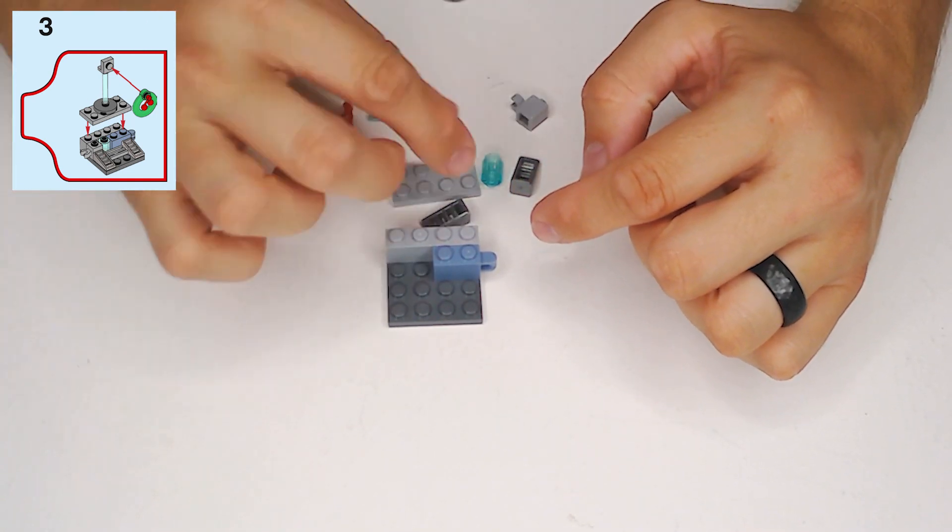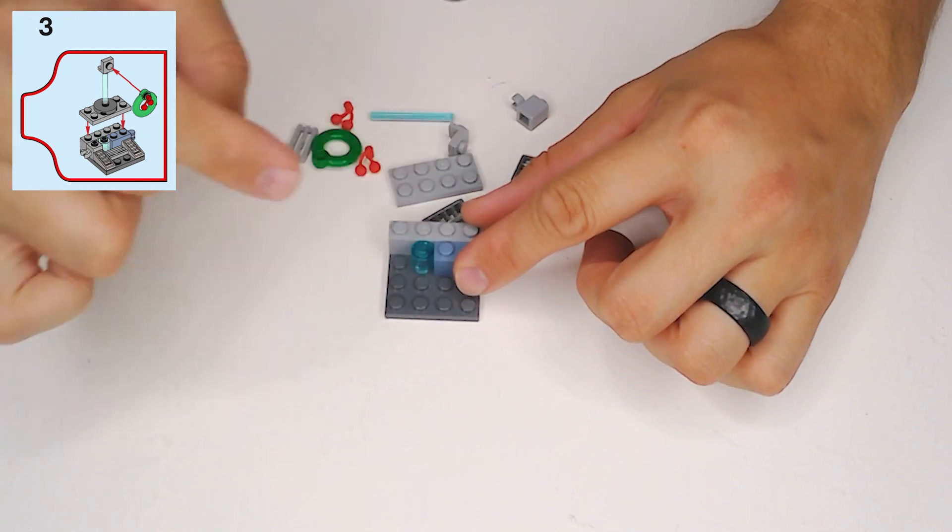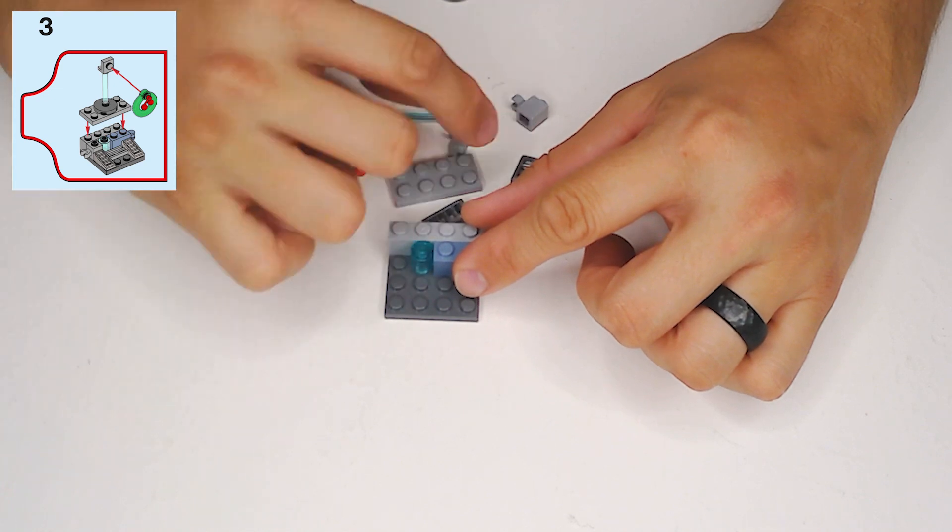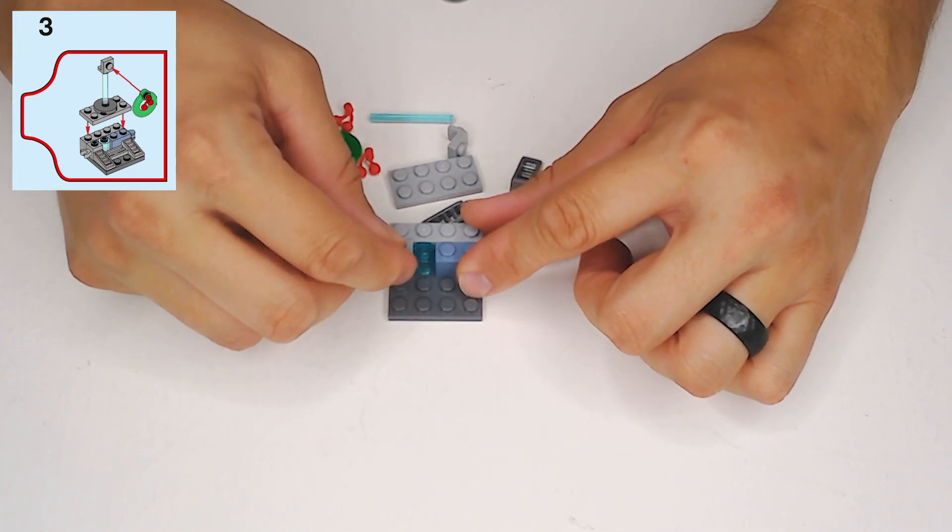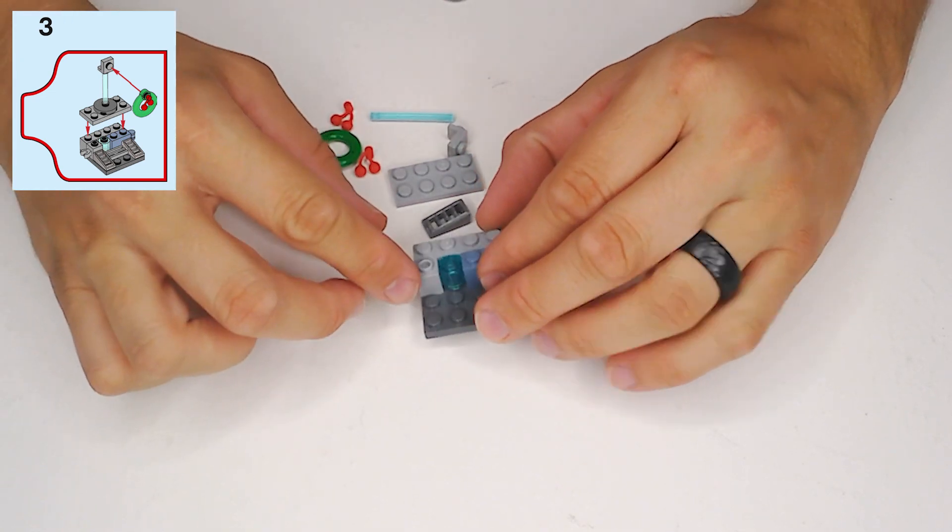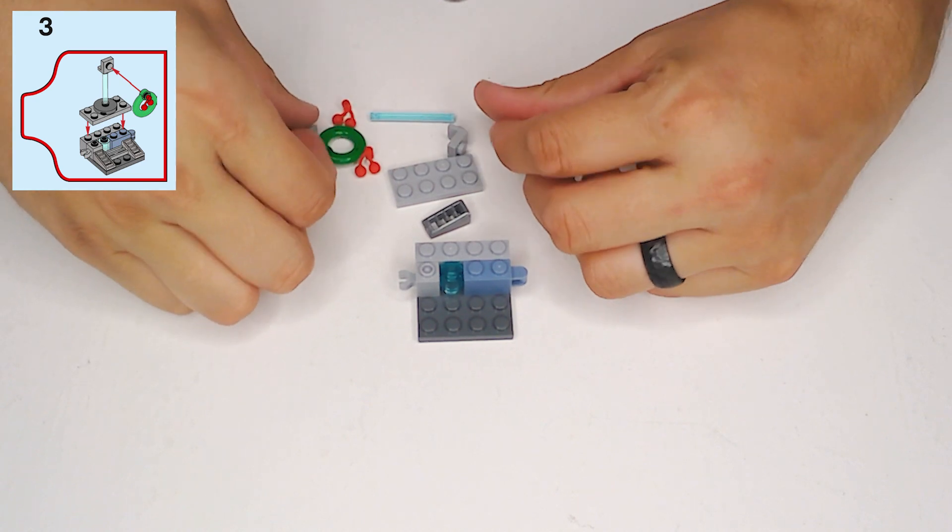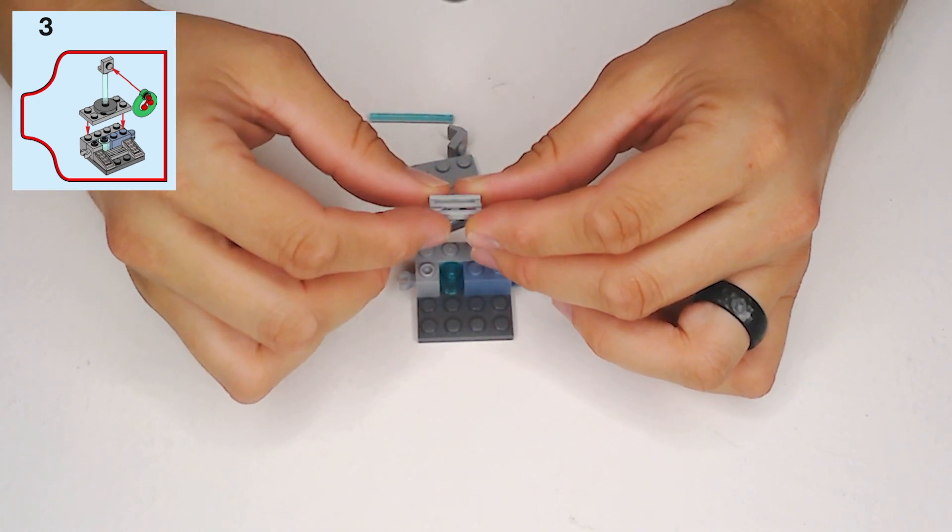And then just inside that, we're going to put this transparent blue can. And then inside that, light gray 1x1 block with clipping from that side. And then let's get this light gray 1x2 bent.